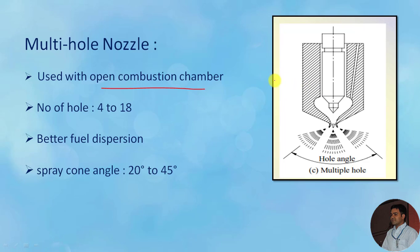In this design, you can observe a number of holes provided at the bottom to spray fuel into the combustion chamber. The number of holes varies between 4 to 18. Greater number of holes provides better fuel distribution. The hole diameter ranges between 0.25 to 0.35 mm, and hole angle lies between 20 to 45 degrees.